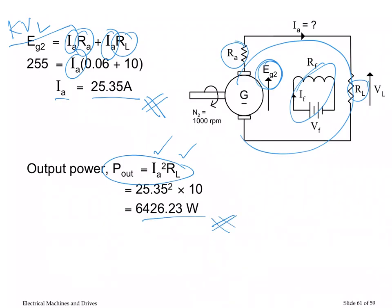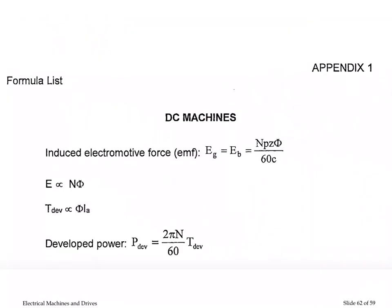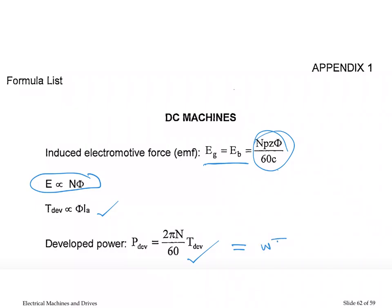We are almost at the end of this topic on DC machines. The formula page shows EG and EB are the same equation — this important proportionality applies to both. Next we will encounter another proportionality, and then we will talk about power, which is omega times torque — the developed torque. That will be covered next week. Thank you, class, see you.